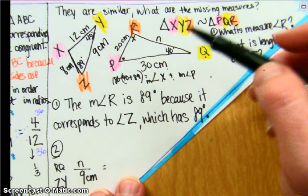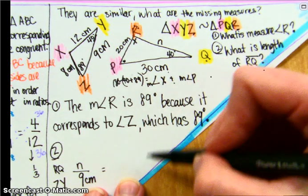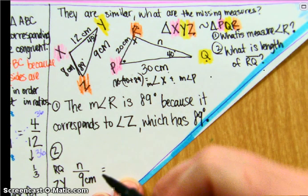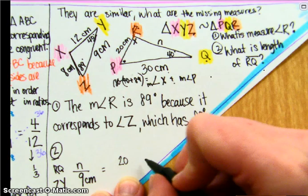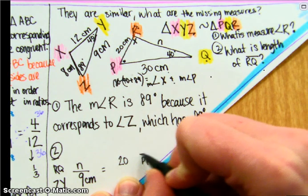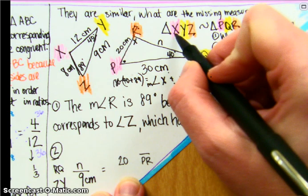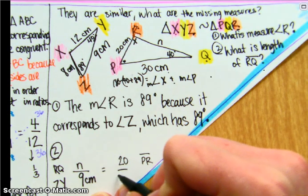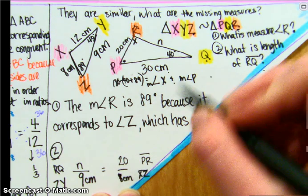Then you could pick from this triangle, because we're dealing with PRQ on the numerator. You could pick either 20 or 30. It does not matter. And this is line segment PR. From here, I'm going first to third, so I need to go from X to Z. X to Z is 8 centimeters.